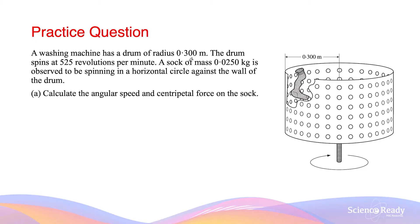A washing machine has a drum of radius 0.3 metres. The drum spins at 525 revolutions per minute. A sock of mass 0.025 kilograms is observed to be spinning in a horizontal circle against the wall of the drum. Calculate the angular speed and the centripetal force on the sock. In this scenario, the normal force is pointing towards the right, towards the centre of the circle, because the surface relative to the sock is vertical. The normal force is perpendicular to the surface, so in this case the normal force is also equal to the centripetal force.